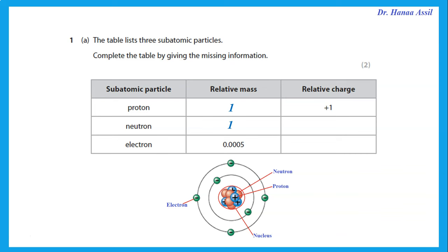The charge on a proton is plus 1. What is the charge on a neutron? Neutrons are neutral, and that means their charge is zero. The mass of an electron is written as 1 over 1840, or 0.0005 — a very small mass. The charge on the electron is minus 1; the electron is negatively charged.